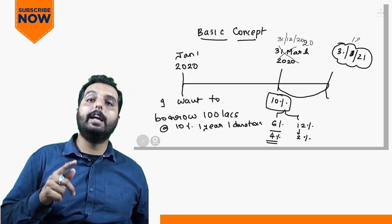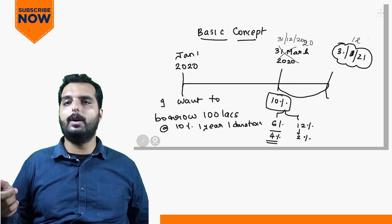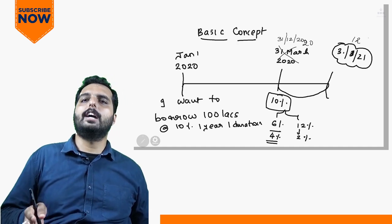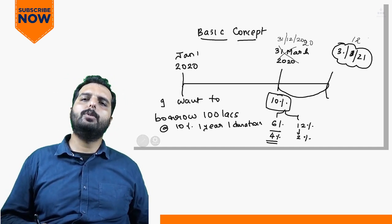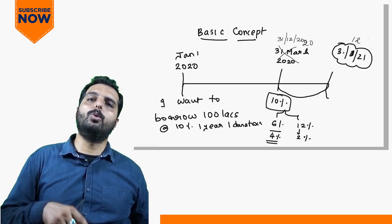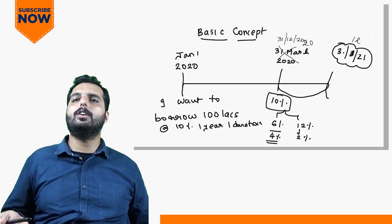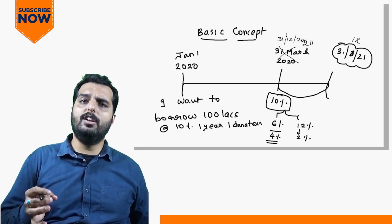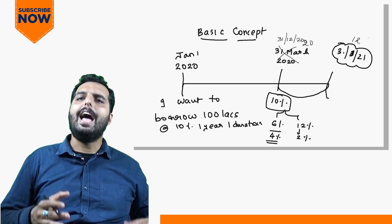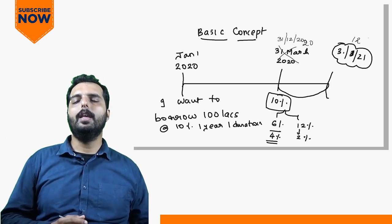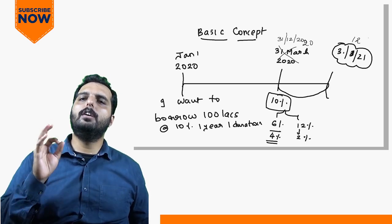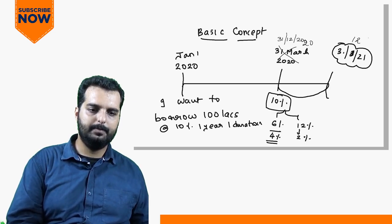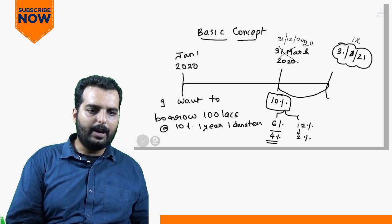On Jan 1, I enter into an FRA — I want to borrow after one year at 10%. After one year, the actual rate can either become 6% or 12%. If the actual rate becomes 6%, I still have to borrow at 10%, so I make a loss of 4%. If the actual rate turns out to be 12%, I still borrow at 10% and my gain turns out to be 2%.